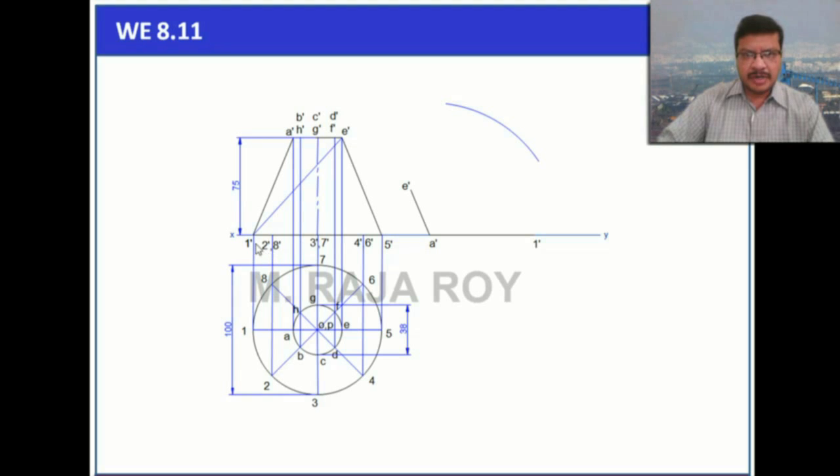Then 1 dash to A dash. This particular length as radius, 1 dash as center, draw another arc. This intersection point gives 5 dash.